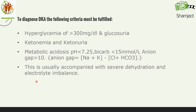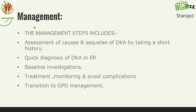Here we will see the line of management. The management steps include assessment of causes and sequelae of DKA by taking a short history. In history, look for symptoms of hyperglycemia, precipitating factors as we discussed, diet and insulin dose. Then look for dehydration, electrolyte imbalance, acidotic breathing, or any sign of infection. Keep diagnosis of DKA in the ER. For non-diabetic children, look for ketonuria and acidosis. For newly diagnosed children, be careful not to miss — it may mimic other serious infections. Use a glucometer and ketone strip to save time.